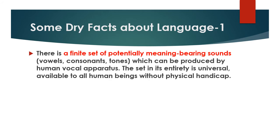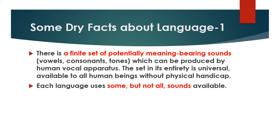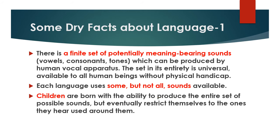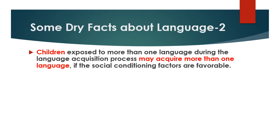Libby Green talks about some dry facts about language, especially when it comes to how we sound. First, there is an infinite set of potentially meaning-bearing sounds — vowels, consonants, and tones — which can be produced by the human vocal apparatus. This set in its entirety is universal, available to all human beings without physical handicap. Each language, say English or Spanish, uses some but not all sounds available to a human.